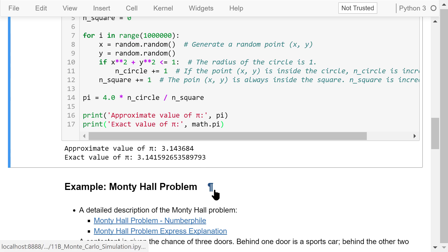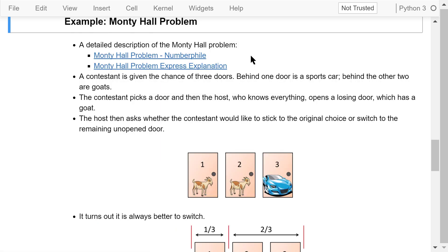Another example of Monte Carlo simulation is the Monty Hall problem. The Monty Hall problem is a puzzle based on a live TV game show in the 1960s. It was named after the game show host, Monty Hall. For a detailed description of the Monty Hall problem and how to solve it, you can watch these two YouTube videos.